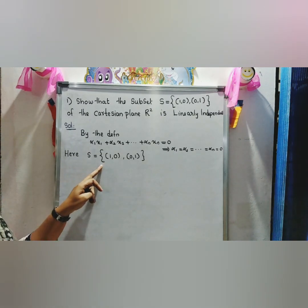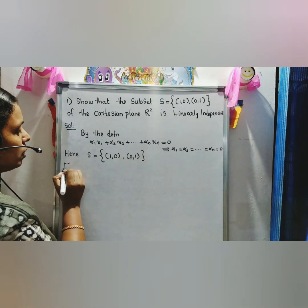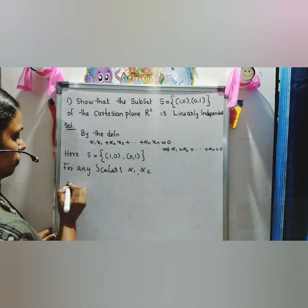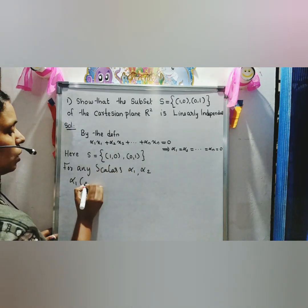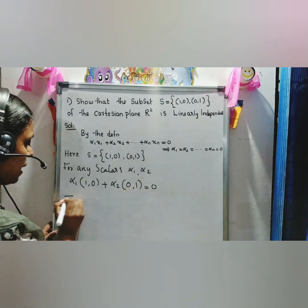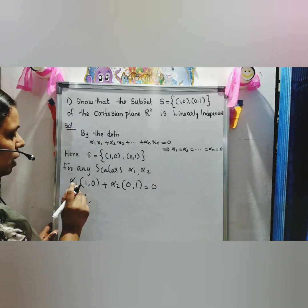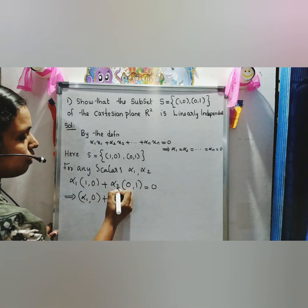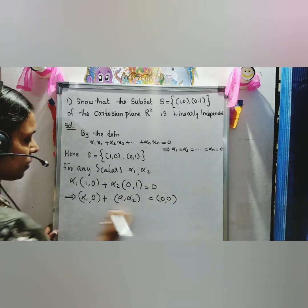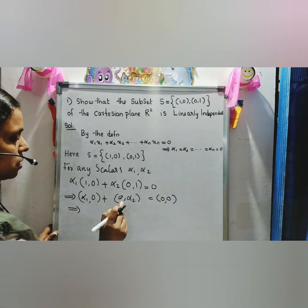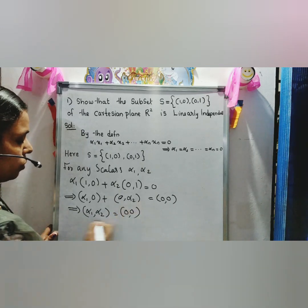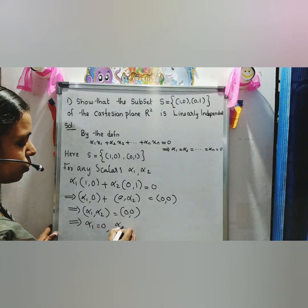Here the set S = {(1,0), (0,1)}. For any scalars α₁ and α₂, we write α₁·(1,0) = (α₁, 0) and α₂·(0,1) = (0, α₂). Adding these gives (α₁, α₂) = (0, 0), which implies α₁ = 0 and α₂ = 0.